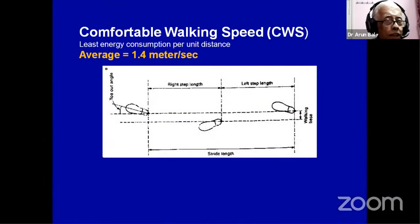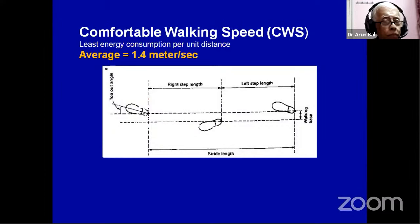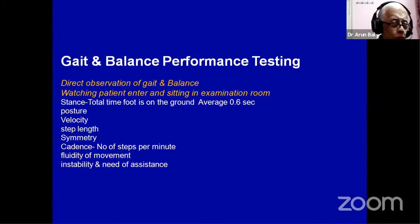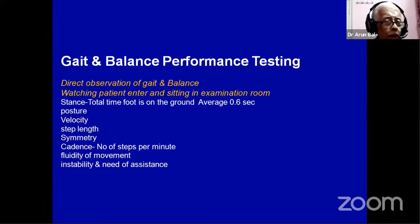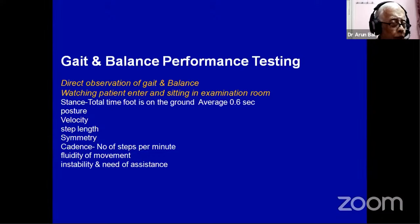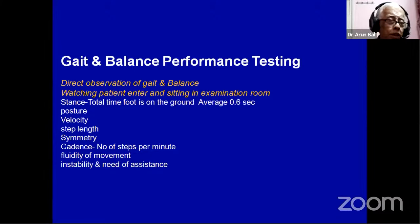Coming to biomechanics, the average comfortable walking speed is 1.4 meters per second. The factors you need to find out include stance — the total time when the foot is on the ground, usually 0.6 seconds on average — and cadence, which is the number of steps per minute. You need to see balance, fluidity, and how the patient walks; all these things you can assess just by observation.